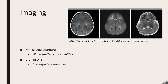To diagnose parechovirus, we can use imaging modalities — two of them being MRI and cranial ultrasound. Research has shown that ultrasound is inadequately sensitive, so we prefer MRI, where we look for white matter abnormalities. On the top right of the screen, you can see where these white lesions are located in a patient with a one-day history of parechovirus infection.